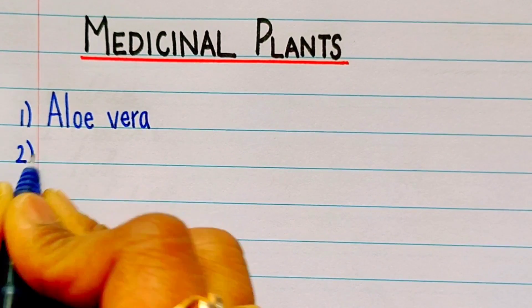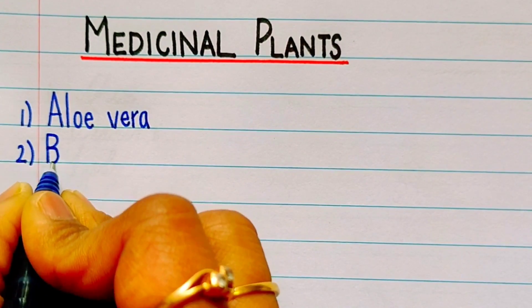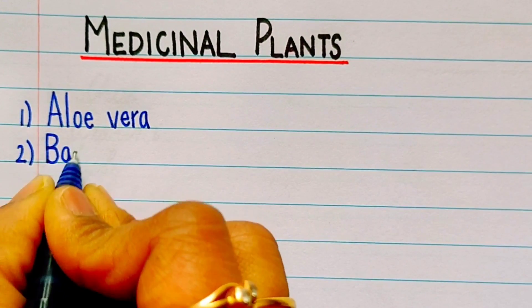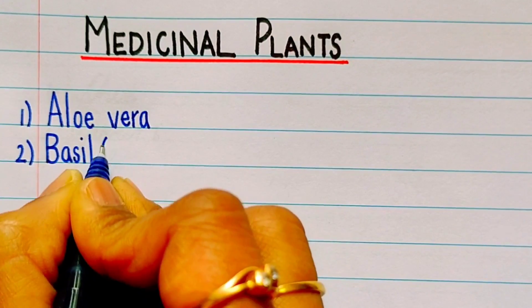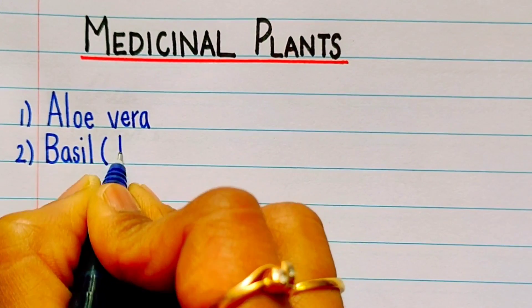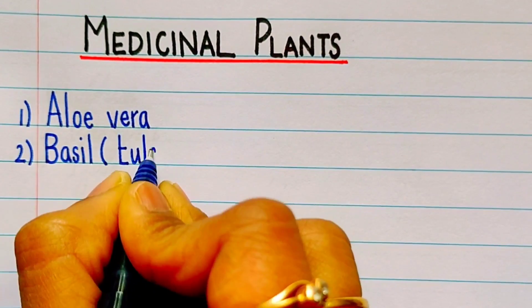Second one is basil. Basil is also called as tulsi, B-A-S-I-L or T-U-L-S-I, tulsi.